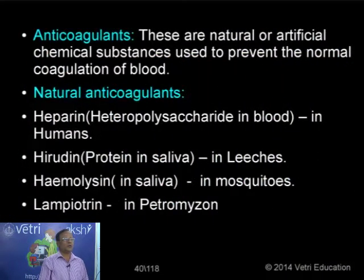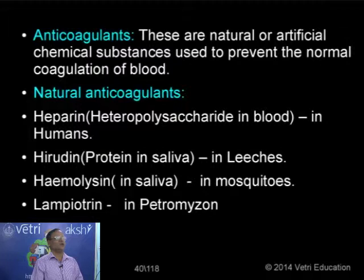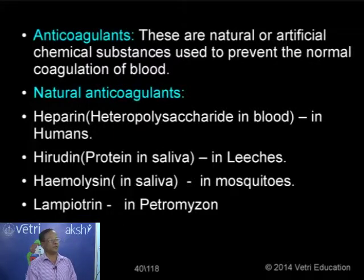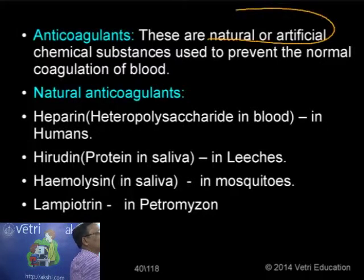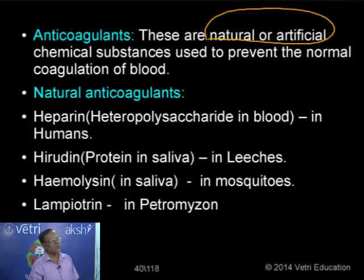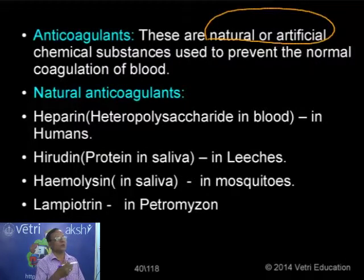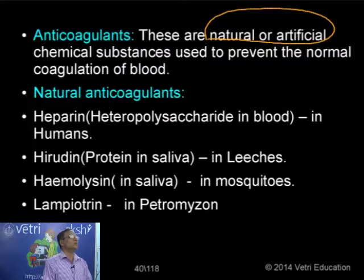The fluidity of the blood is maintained inside the body. Certain substances formed inside the body prevent the formation of clots or coagulation — these are called anticoagulants. Anticoagulants may be natural or artificial. Natural anticoagulants are formed inside the body; artificial ones — mostly inorganic salts — are used in the laboratory to prevent clotting while blood is stored in blood banks.